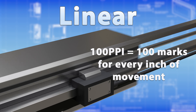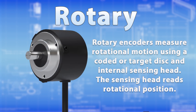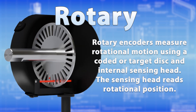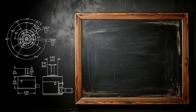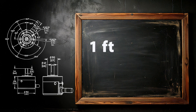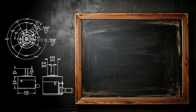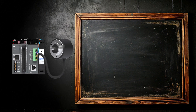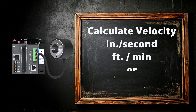A 100 ppi resolution linear encoder reads 100 marks for every inch of movement. Rotary encoders measure rotational motion using a coded or target disk and an internal sensing head. Resolution is usually expressed in pulses per revolution or lines per revolution. A 100 ppr resolution encoder would read 100 marks on its coded disk for every revolution. If one revolution correlates to one foot of travel, then the distance traveled per pulse seen by a controller is 0.12 inches. If a controller counts the incoming pulses and associates them with a timer value, then velocity can be calculated in inches per second, feet per minute, or any ratio that is most helpful.